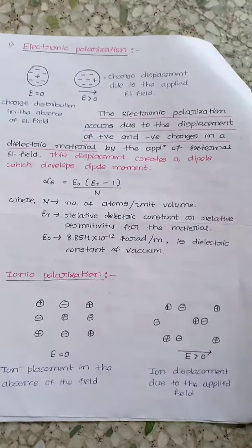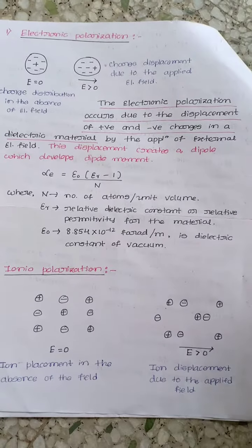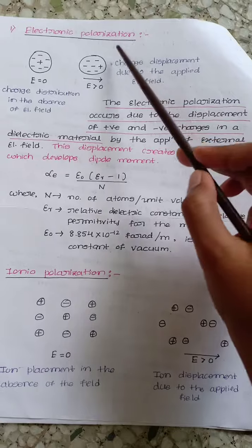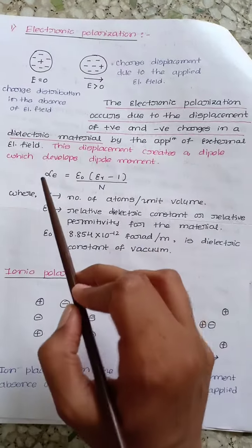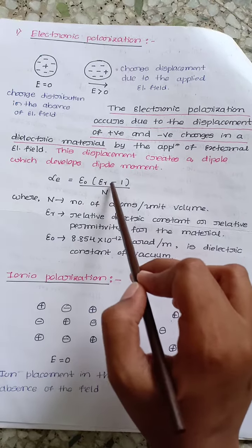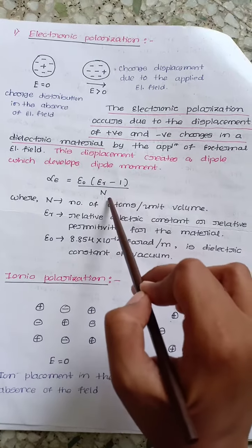This displacement creates a dipole which develops dipole moment. Electronic polarization is denoted by alpha E, which equals epsilon 0 times epsilon r minus 1 divided by n.